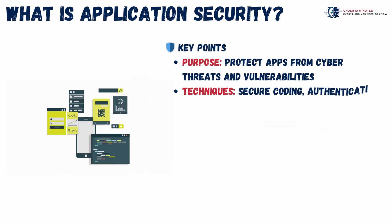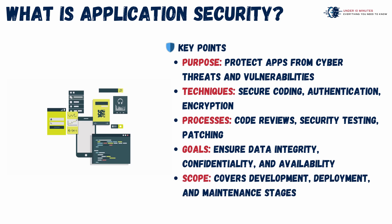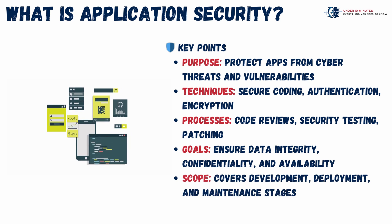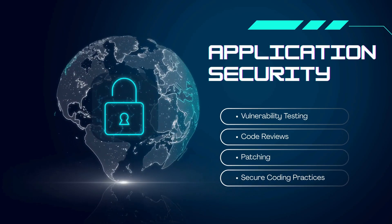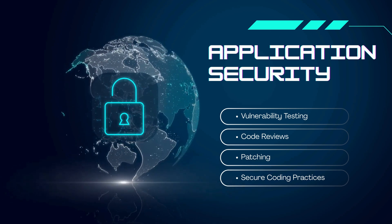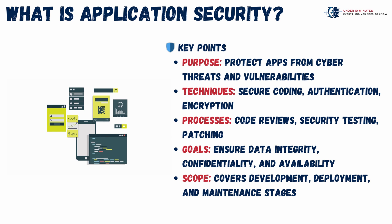Let's take a look at what application security is. Application security plays a vital role in safeguarding software applications throughout their lifecycle. It involves implementing secure coding techniques, enforcing proper authentication mechanisms, and using encryption to protect sensitive data. Routine practices like code reviews, vulnerability assessments, and timely patching help detect and address potential threats early. The ultimate goal is to maintain the integrity, confidentiality, and availability of an application, ensuring users and systems remain protected against evolving cyber risks. By embedding security into every stage of development, organizations can build resilient and trustworthy digital experiences.